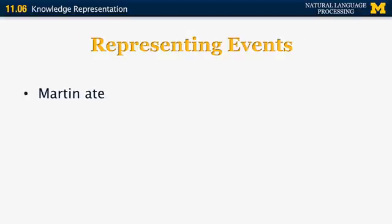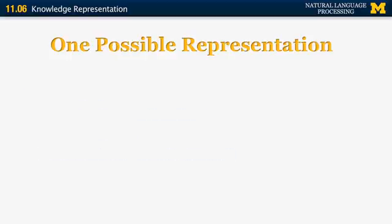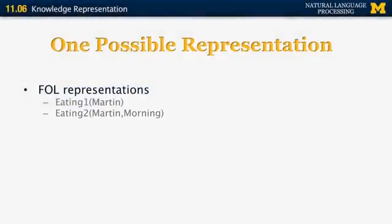We can also want to represent events. Suppose we want to represent the statement 'Martin ate'. We may also want to represent 'Martin ate in the morning', 'Martin ate fish', 'Martin ate fish in the morning', and so on. One possible representation is to represent each of those sentences completely independently. We can define a predicate called eating-one, which is the first species of eating events. Eating-one has one argument, namely the eater — so every time we know that somebody ate, we can represent that fact as an eating predicate with that person's name as the first argument.